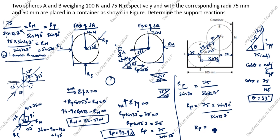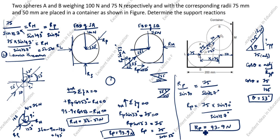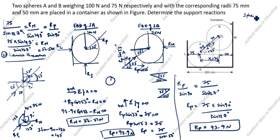RP equals 93.9 Newton. The first method and second method give the same answer. You can follow whichever method is easiest for sphere B. For sphere A, we will use the two equilibrium conditions to solve the reactions. The first condition is summation of Fx equals zero and summation of Fy equals zero.